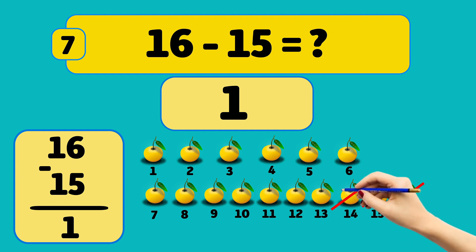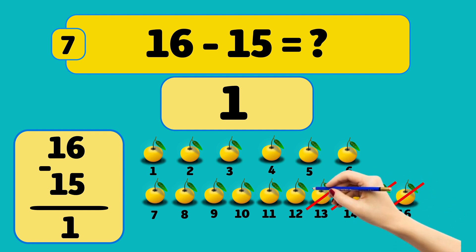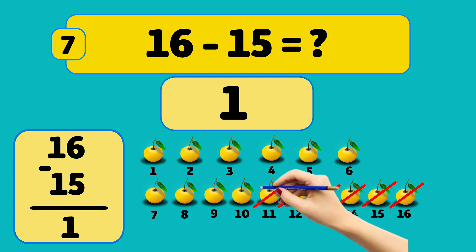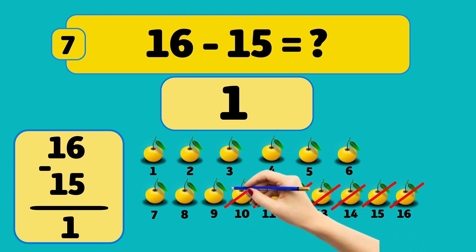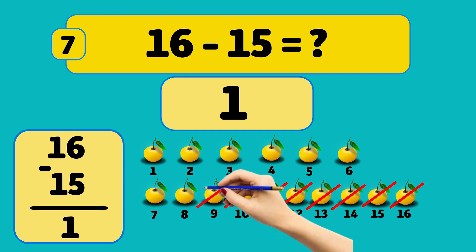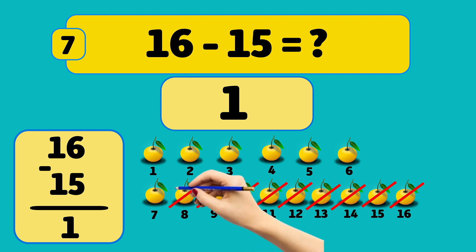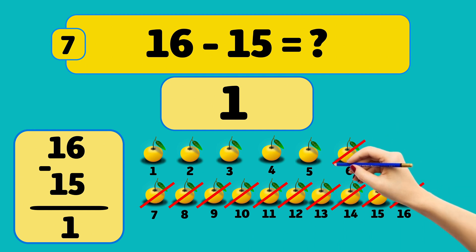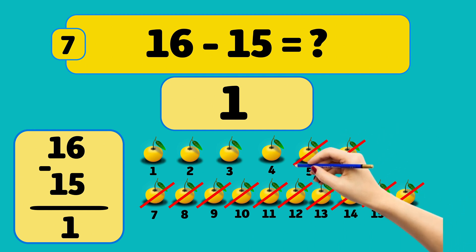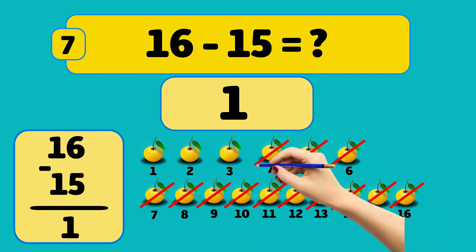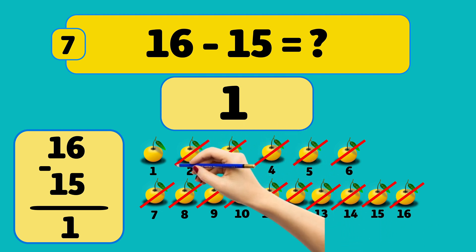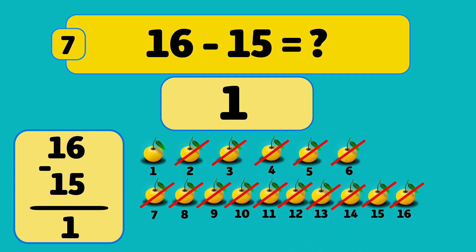Fourteen, thirteen, twelve, eleven, ten, nine, eight, seven, six, five, four, three, two. Now we have one orange left.